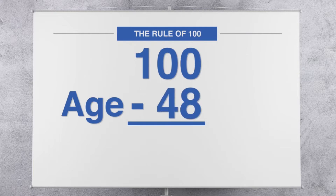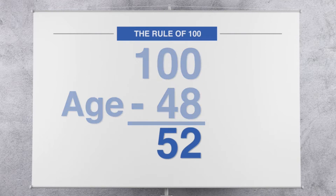Let's say you're 48 years old. If you take 100 minus 48, you get 52. So how do you use that in your financial strategies? The 52, as a general rule, will represent the maximum percentage of your financial assets that you would want to allocate to financial vehicles exposed to any form of market risk.